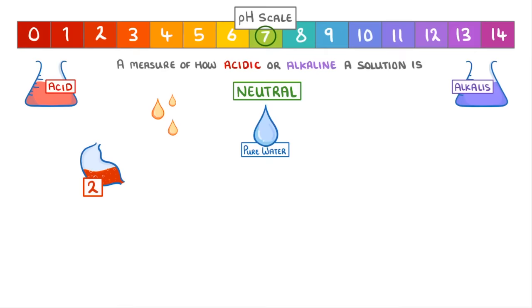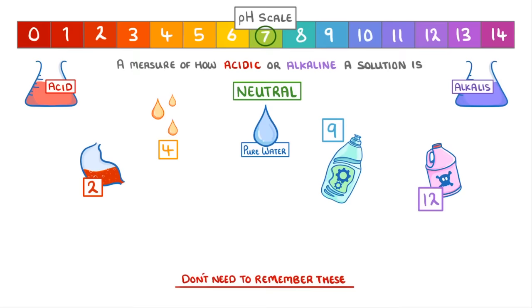Then for alkalis, washing up liquid has a pH of around 9, and the bleach we use to clean bathrooms has a pH of around 12. Be aware though, you don't have to remember these specific examples, just to give you some context.